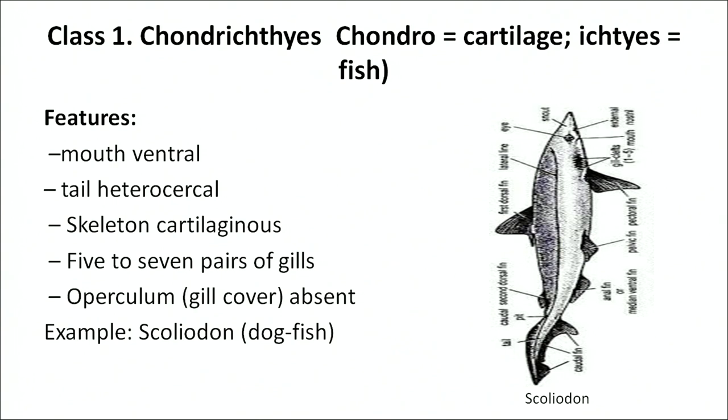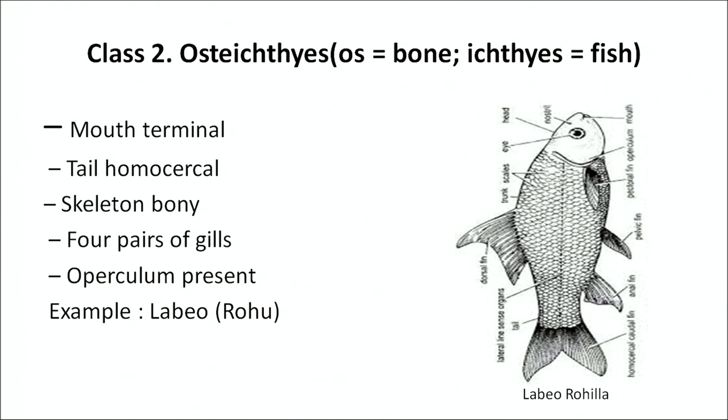Chondrichthyes: 'chondro' means cartilage and 'ichthys' means fish — so cartilaginous fish. The mouth is ventral. The tail is heterocercal — meaning the upper lobe is larger than the lower one, with the vertebral column extending into the upper lobe. Skeleton is cartilaginous; they have five to seven pairs of gills. Operculum (gill cover) is absent. Example: dogfish or Squalus. Osteichthyes means bony fish. The mouth is terminal and the tail is homocercal — outwardly symmetrical with the backbone passing into one lobe. Skeleton is bony. They have four pairs of gills and the operculum is present. Example: Labeo or rohu.